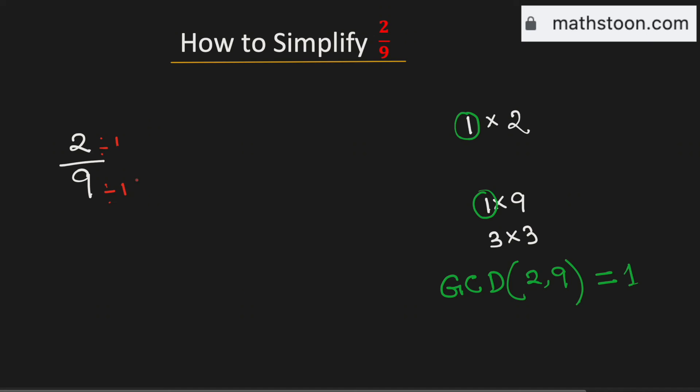Dividing by 1, we get 2 divided by 9. So, 2 divided by 9 is already in simplified form. And this is our final answer.